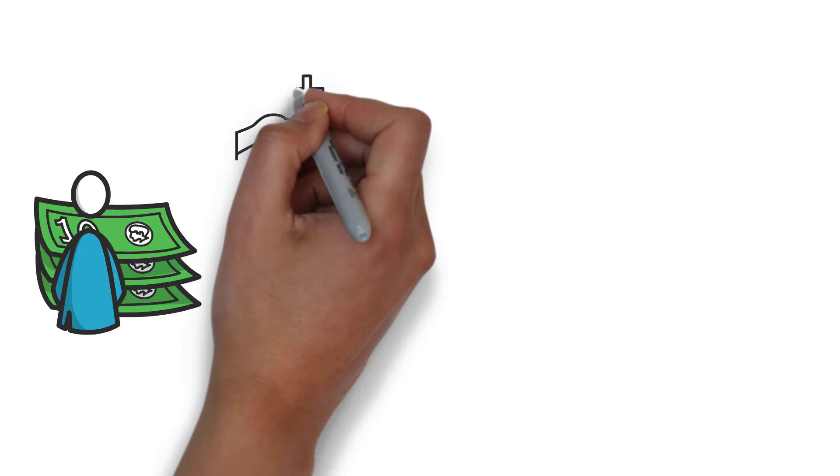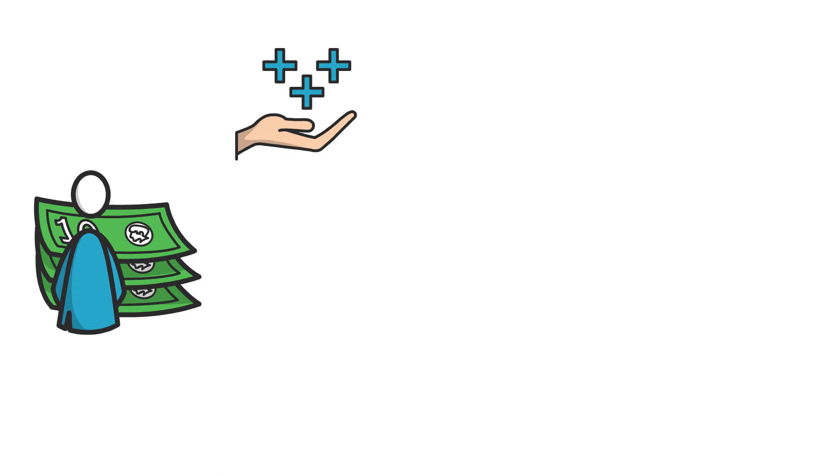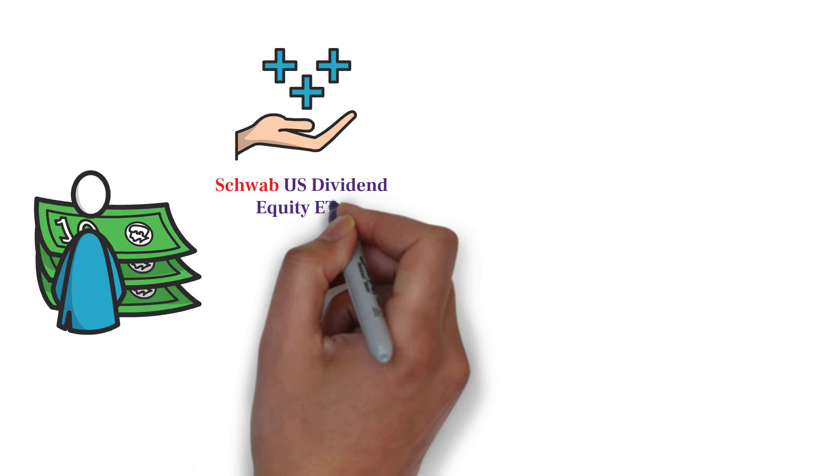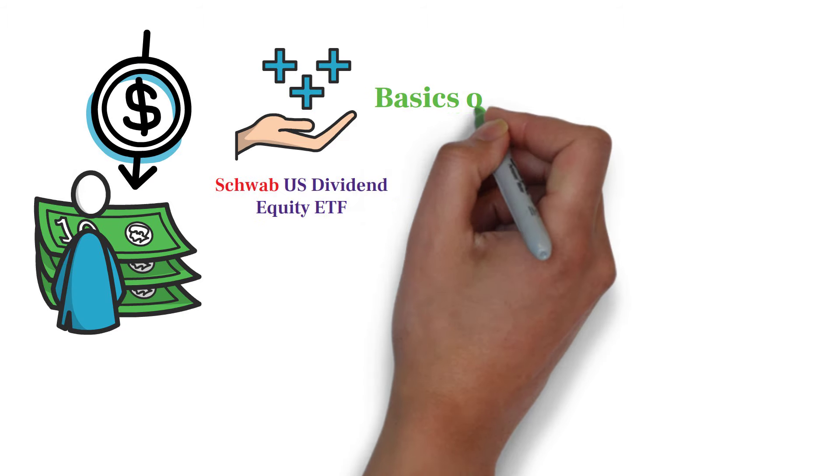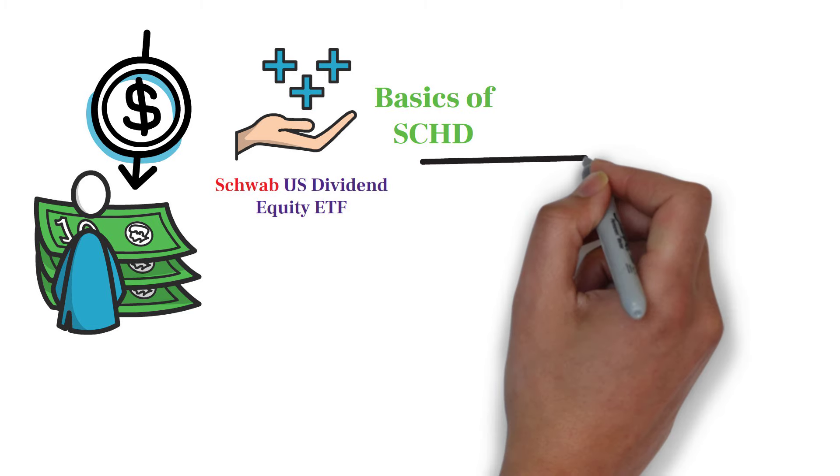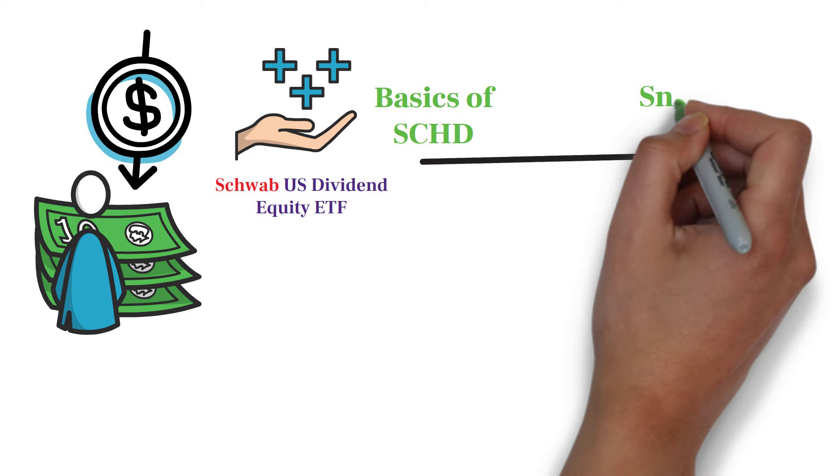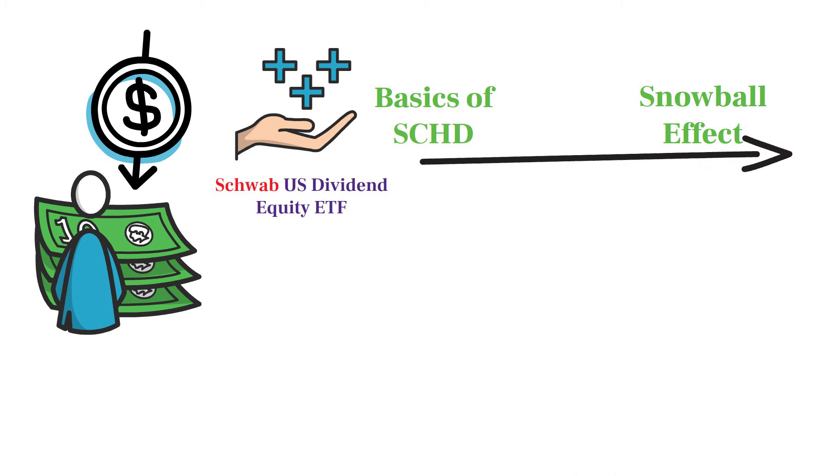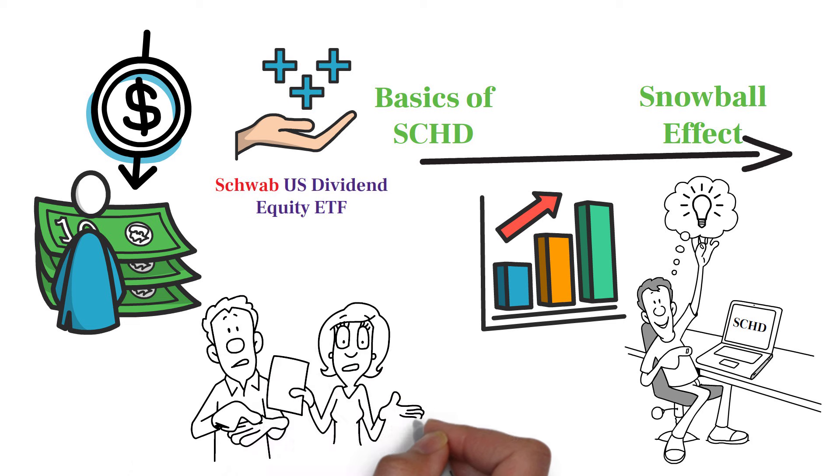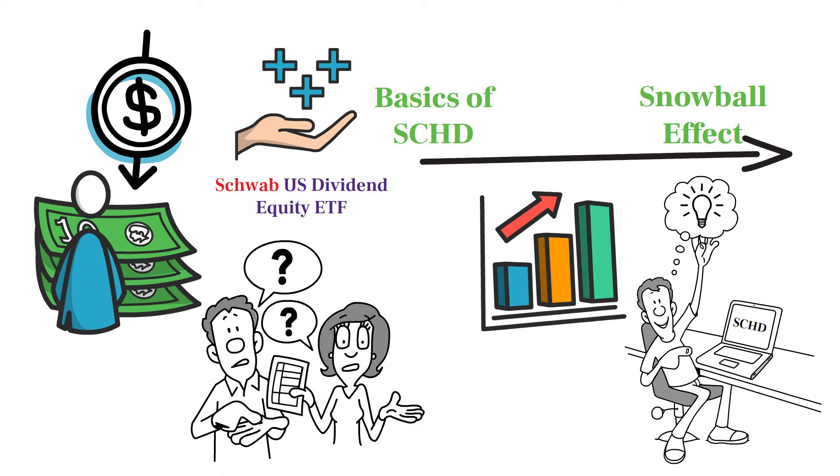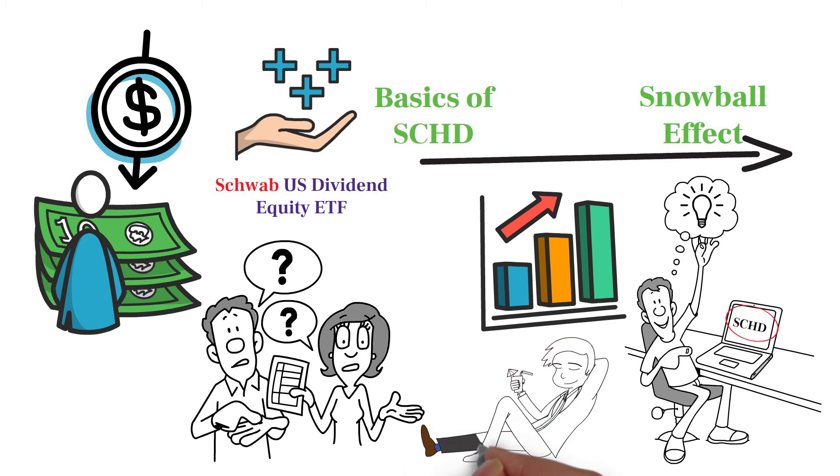Today, we're diving into the world of dividends and showing you how you can leverage Charles Schwab's SCHD, the Schwab U.S. Dividend Equity ETF, to create a reliable income stream. We'll cover everything from the basics of SCHD, its impressive performance history, to the powerful dividend snowball effect. By the end of this video, you'll know exactly how SCHD can help you grow your wealth and how much you need to invest to potentially live off dividends in the future. Stick around, this could be the game-changer you've been looking for on your path to financial freedom.